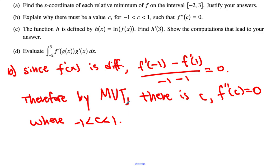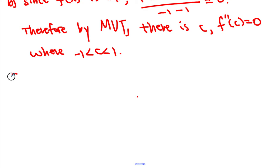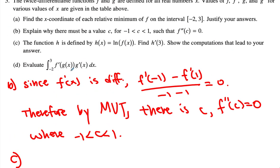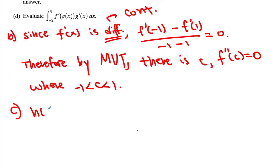Now part c. And don't forget in this case when this is differentiable, that implies continuity as well. The function h is defined as h of x is equal to ln of f of x. Now they want you to find this one.